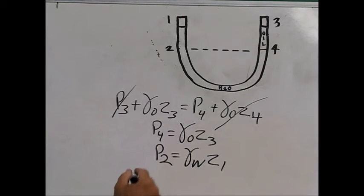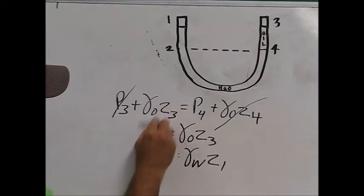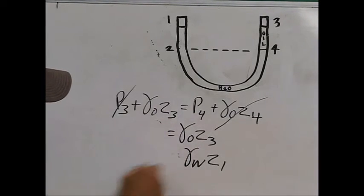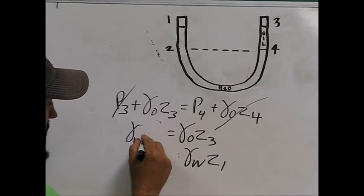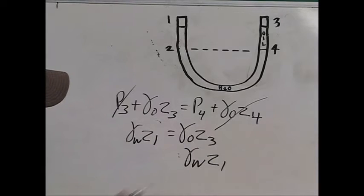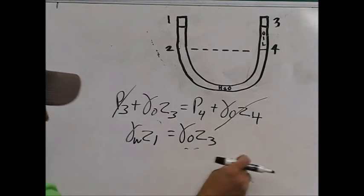And as I stated before, our theory is that the pressure at 4 and the pressure at 2 are equal, so because of that, we could set them equal to each other, which would give us γ_water*Z1 = γ_oil*Z3.